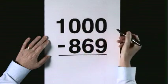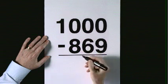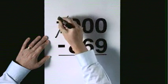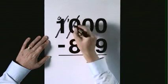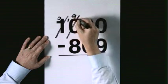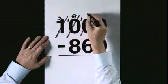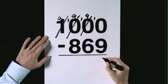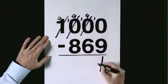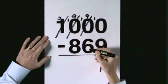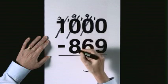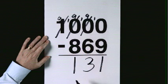1,000 subtract 869. Exchange. Exchange. Exchange. 10 take 9 is 1. 9 take 6 is 3. 9 take 8 is 1. The answer is 131.